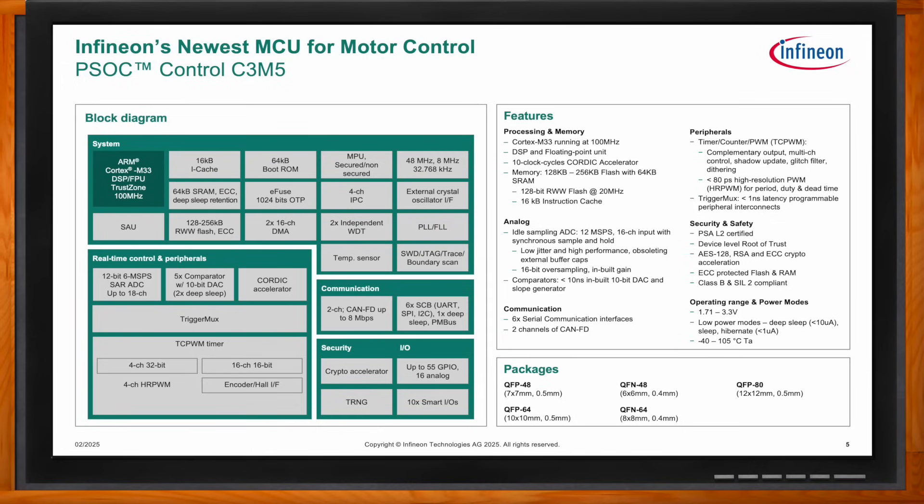In deep sleep mode, the PSoC Control C3 draws 10 microamps; in hibernate mode it draws 1,000 nanoamps with real-time clock and low-power comparator operating. The PSoC Control C3 is offered in both QFP and QFN packages ranging from 48 to 80 pins, runs off a voltage rail from 1.71V up to 3.3V, and operates in an environment ranging from -40°C up to 105°C.